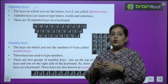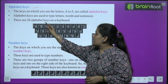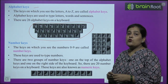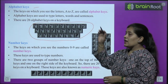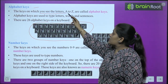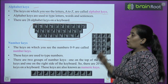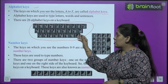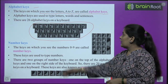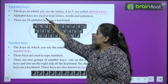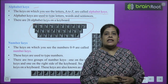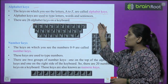Alphabet means A to Z. The keys on which you see the letters A to Z are called alphabet keys. Alphabet keys are used to type letters, words, and sentences.